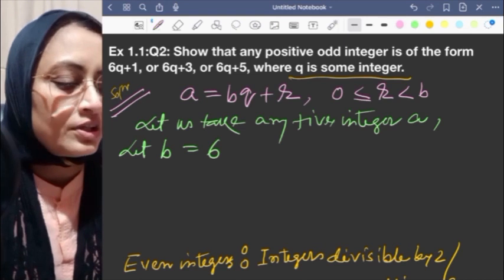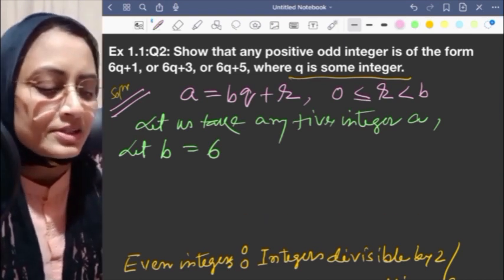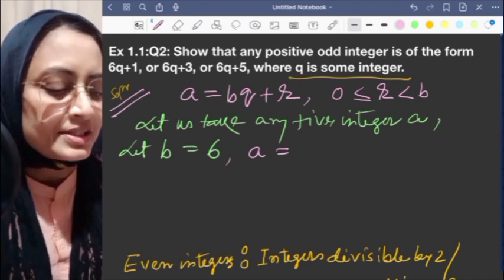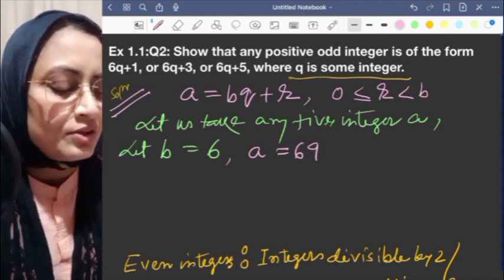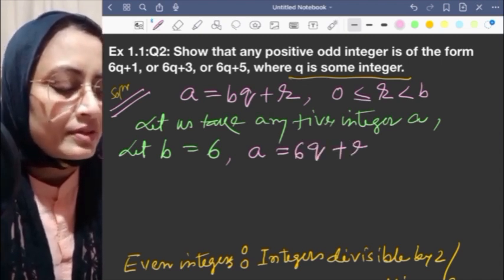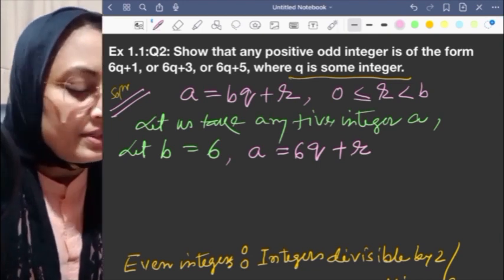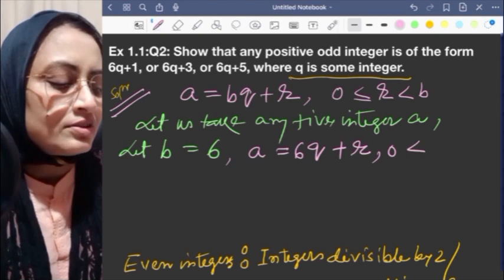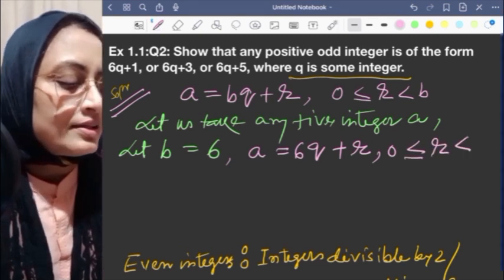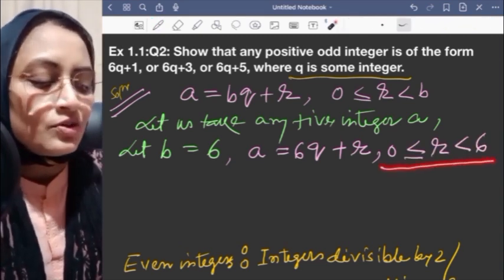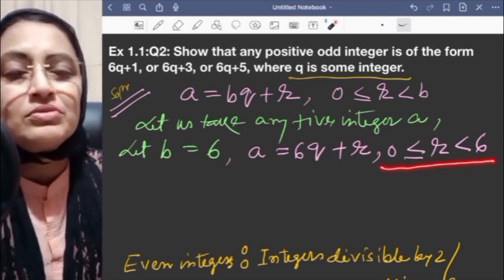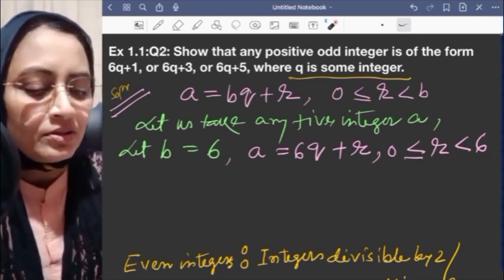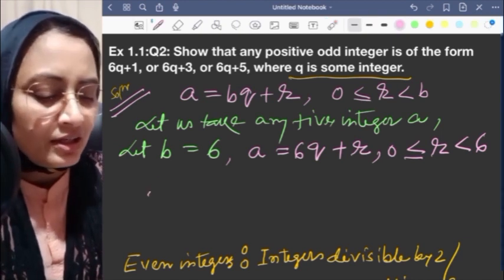By Euclid's division lemma, a equals 6q+r, where 0 ≤ r < 6. So r can be 0, 1, 2, 3, 4, or 5. We have to take any value of r from 0 to 5.